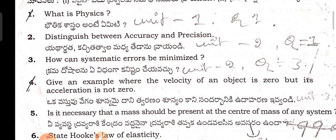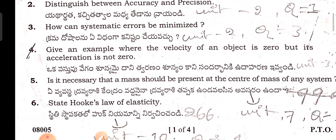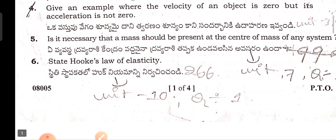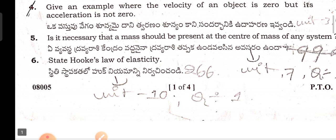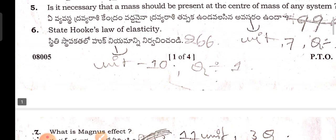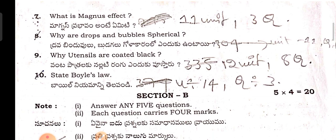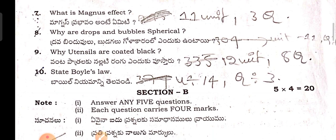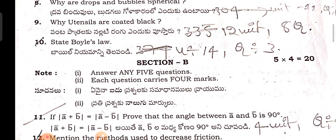What is physics? Distinguish between accuracy and precision. How can systematic errors be minimized? Give an example where the velocity of an object is zero but its acceleration is not zero. Is it necessary that mass should be present at the center of mass of any system? State Hooke's law of elasticity. What is Magnus effect? Why are drops and bubbles spherical? Why do utensils have coated black? State Boyle's law.